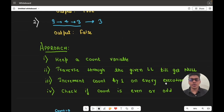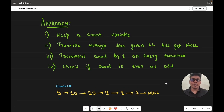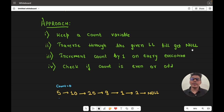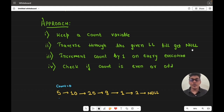Now let's see the approach to solve this problem. The simplest approach is that we are going to have a count variable and traverse each node of the linked list until we get null, incrementing the count variable every time we visit a node. After traversing the whole linked list, we check the value of count — if it is even we return true, if it is odd we return false.